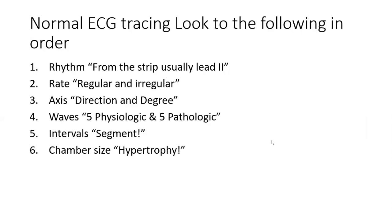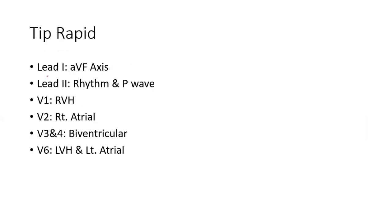For axis we look at lead I and AVF. For rhythm and P wave morphology we use lead II. Right ventricular hypertrophy is seen in V1, right atrial hypertrophy in V2, biventricular hypertrophy in V3 and V4, and left ventricular and left atrial hypertrophy in V6.